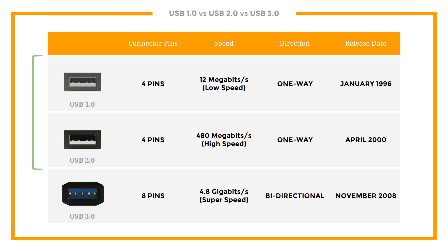USB 1.0 was the first iteration of a series of USB standards developed in 1994 by Compaq, DEC, IBM, Intel, Microsoft, NEC, and Nortel.